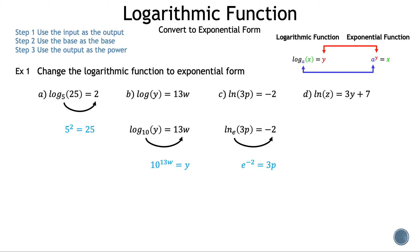Now let's move on to d: natural log of z is equal to 3y plus 7. Let's draw an arrow from the base to the output. Where is the base? The base is e, and we don't write that because natural log is a special case of logarithms where the base is always e. In this case, e to 3y plus 7. The e will be the base of the exponential, and 3y plus 7 will be the power. We set that equal to the last variable we haven't used, z. So our exponential is e raised to the power of 3y plus 7 is equal to z.